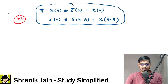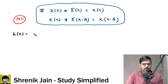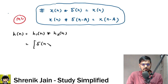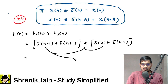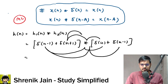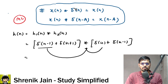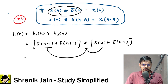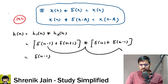h(n) = h1(n) * h2(n) = [δ(n−1) + δ(n+1)] * [δ(n) + δ(n−1)]. Expanding into four terms: δ(n−1)*δ(n), δ(n−1)*δ(n−1), δ(n+1)*δ(n), δ(n+1)*δ(n−1). When δ(n−1) is convolved with δ(n), since x(n)*δ(n) = x(n), the output is δ(n−1).